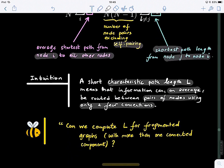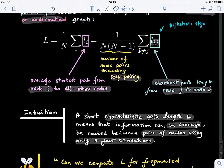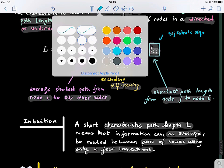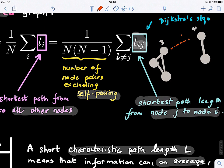We've seen fragmented graphs and connected components. If we have a graph with more than one connected component, can we actually compute L based on this definition? No. The problem is that the length L — if I have a graph, let me give a small example — if I have two components where the nodes within each component are connected, the length between, say, node 3 and node 4 in different components is considered infinite because they're disconnected, so we cannot sum them.